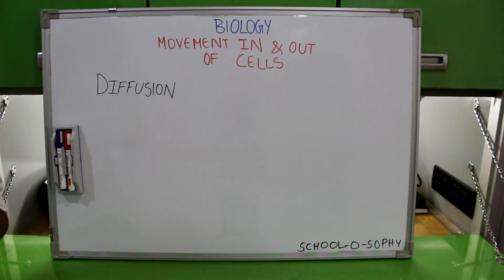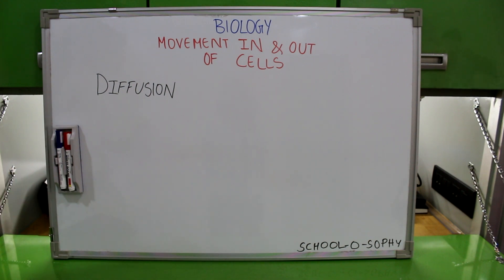Diffusion is the net movement of particles and ions from an area of higher concentration to an area of lower concentration, down the concentration gradient, due to the random movement of particles.